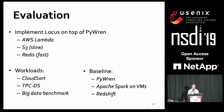We implemented Locus on top of Pywren, a Python analytics framework for serverless platforms, using AWS Lambda as the compute platform, S3 as slow storage, and Redis as fast storage. The system is pluggable to support other storage systems or computing platforms — IBM also has its own Pywren implementation. We evaluate Locus on workloads including CloudSort, TPC-DS benchmark, and Big Data benchmark, comparing against vanilla Pywren, Apache Spark on VMs, and Redshift.